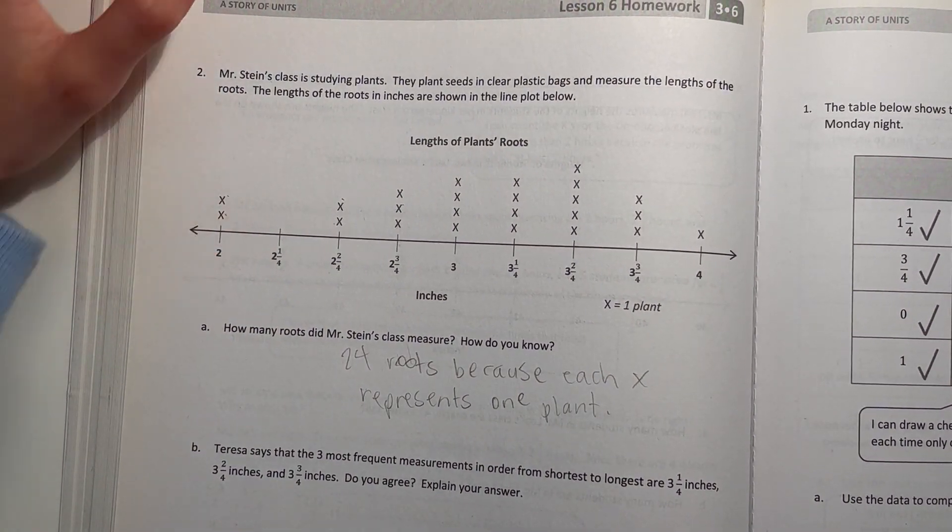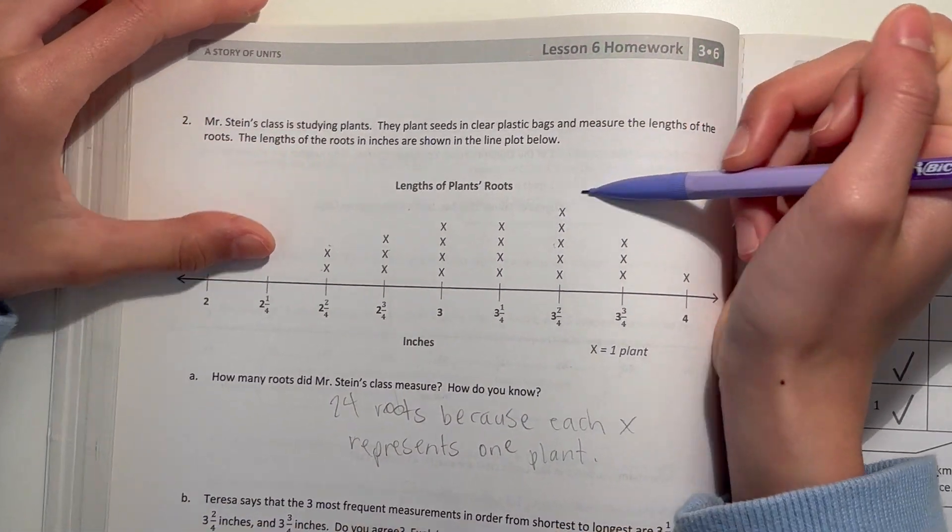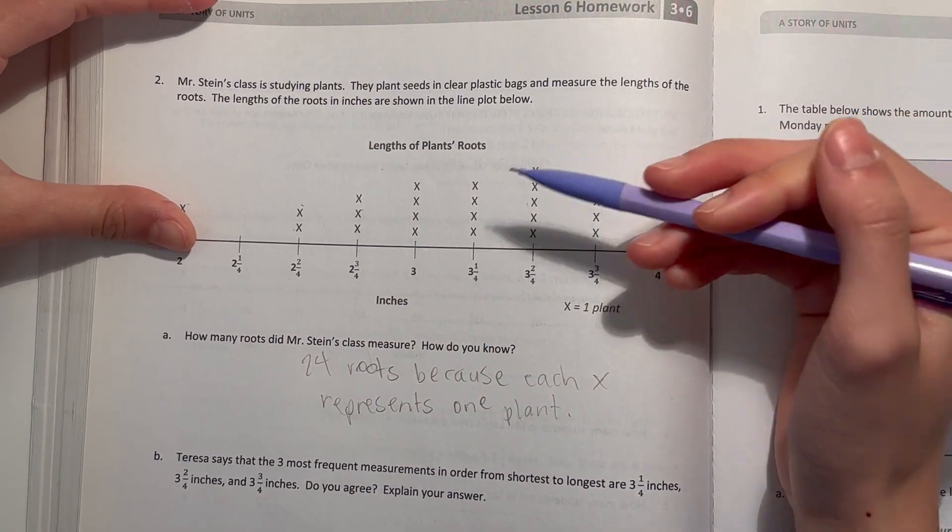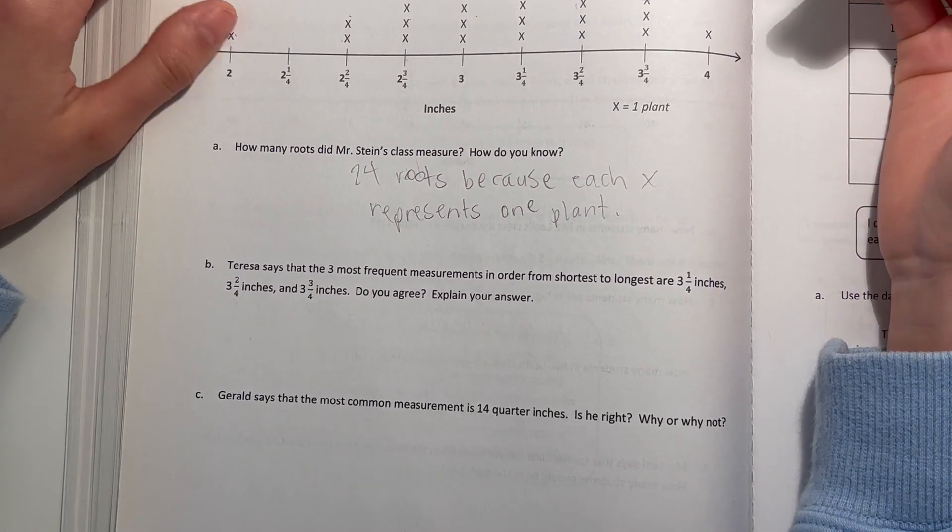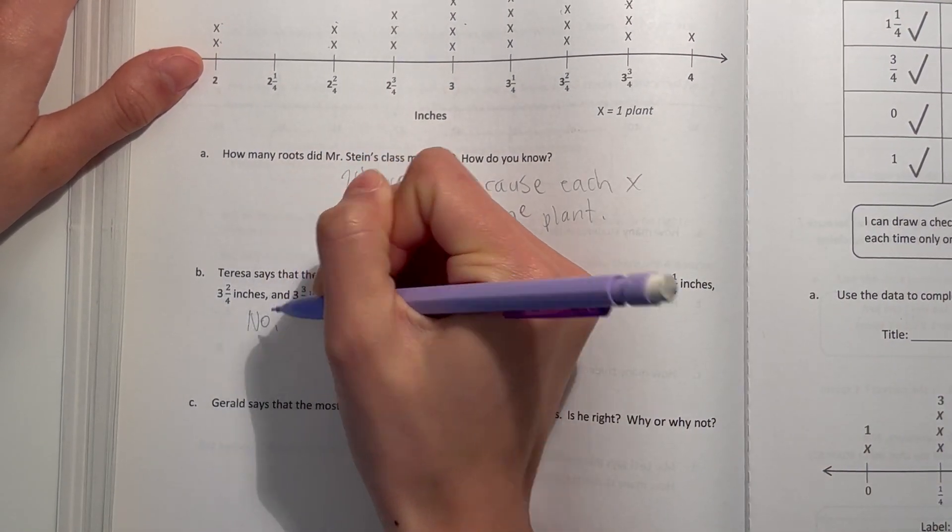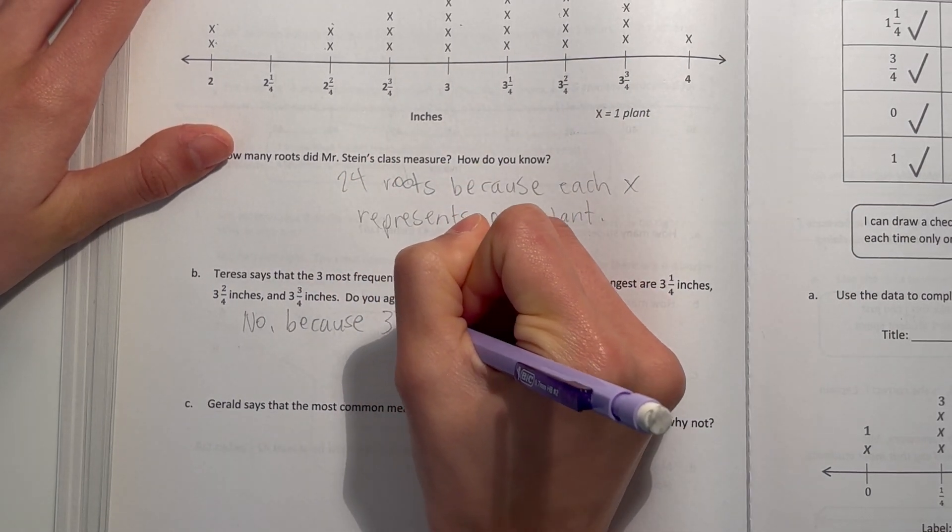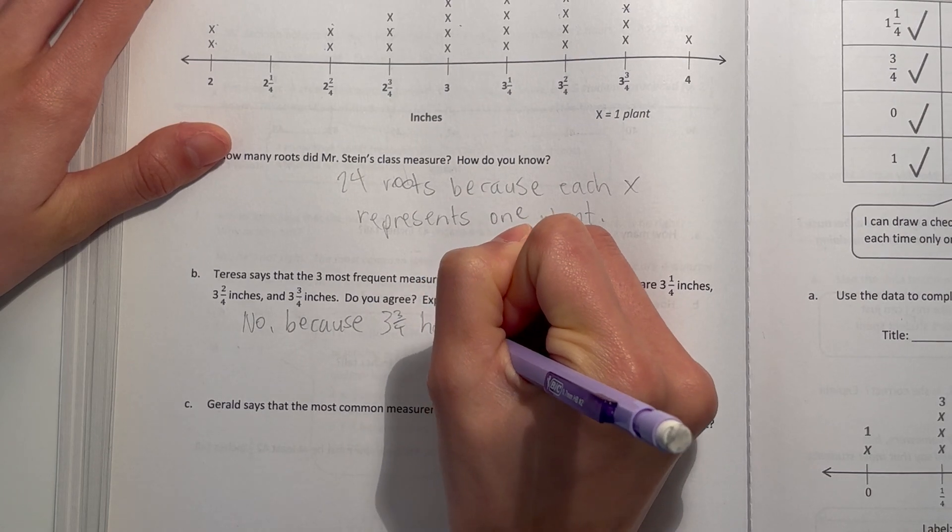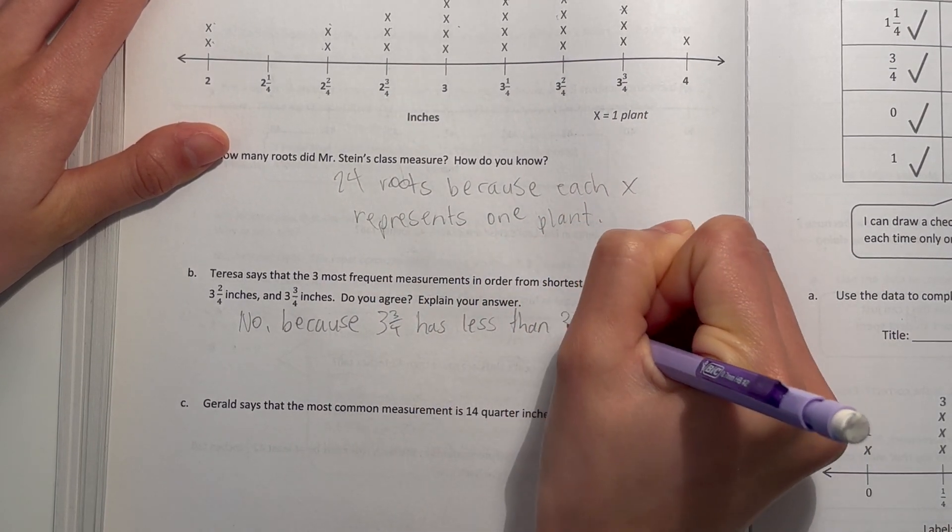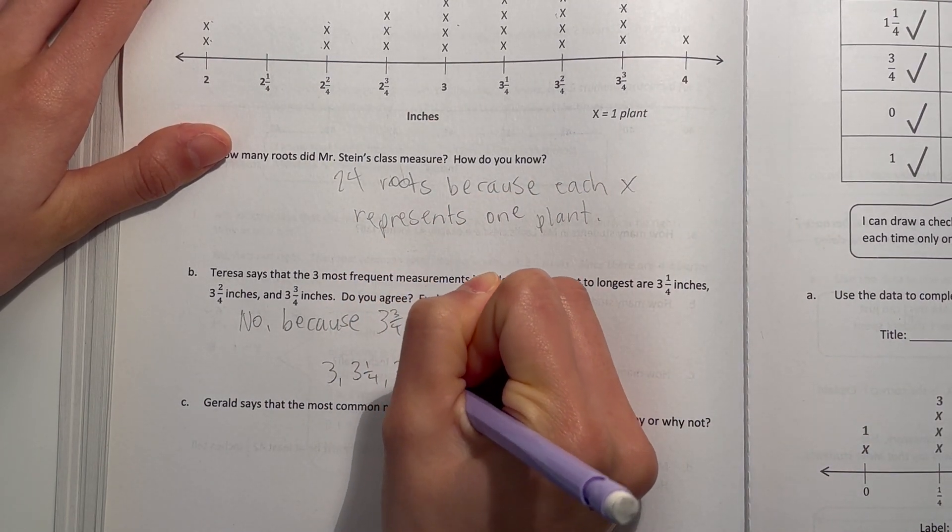Alright, so the highest ones is 3, 3 and 1 fourth, and 3 and 2 fourths. So I don't agree because she said 3 and 3 fourths is less than the other measurements. So no, because 3 and 3 fourths has less than 3. So it should be 3, 3 and 1 fourth, and 3 and 2 fourths.